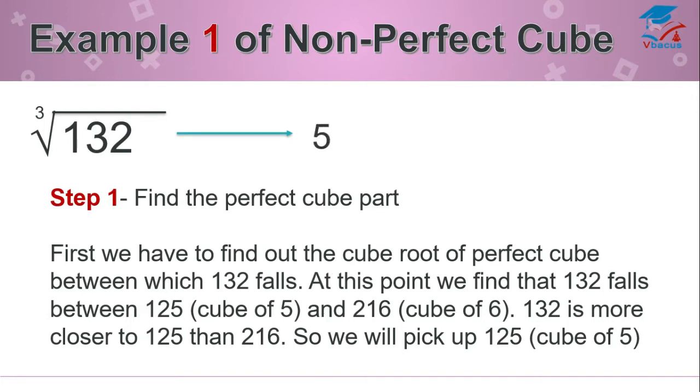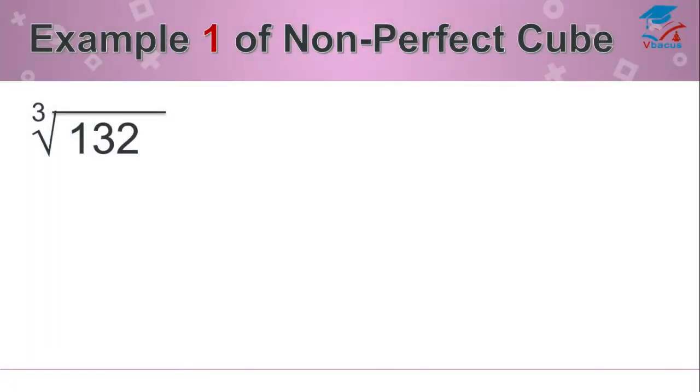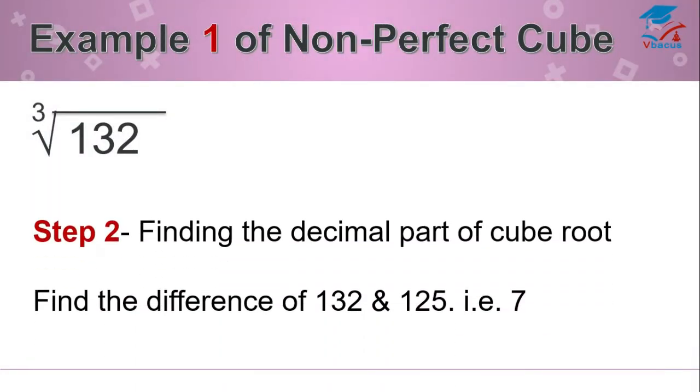Now, what is the next step? Let us see. Step 2: Finding the decimal part of cube root. Find the difference of 132 and 125, that is 7.